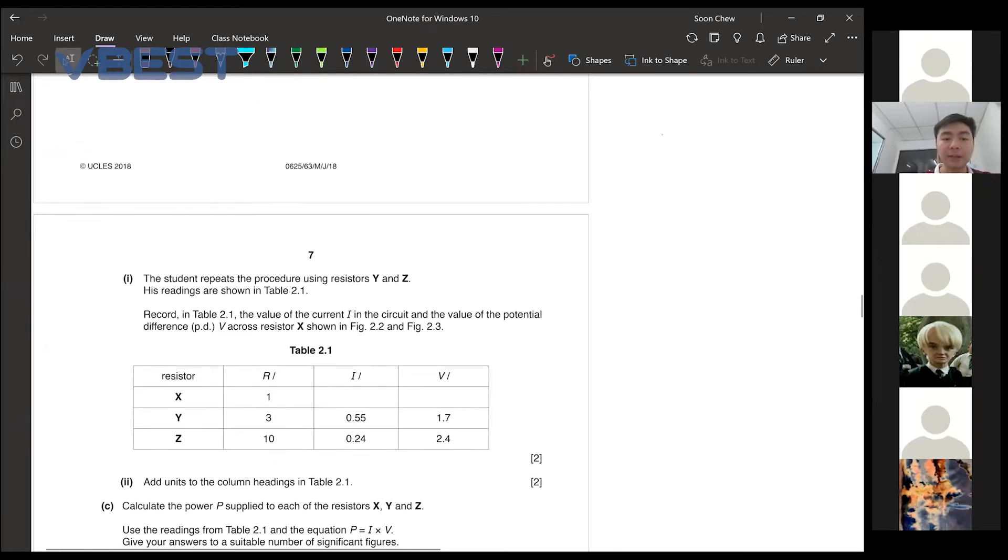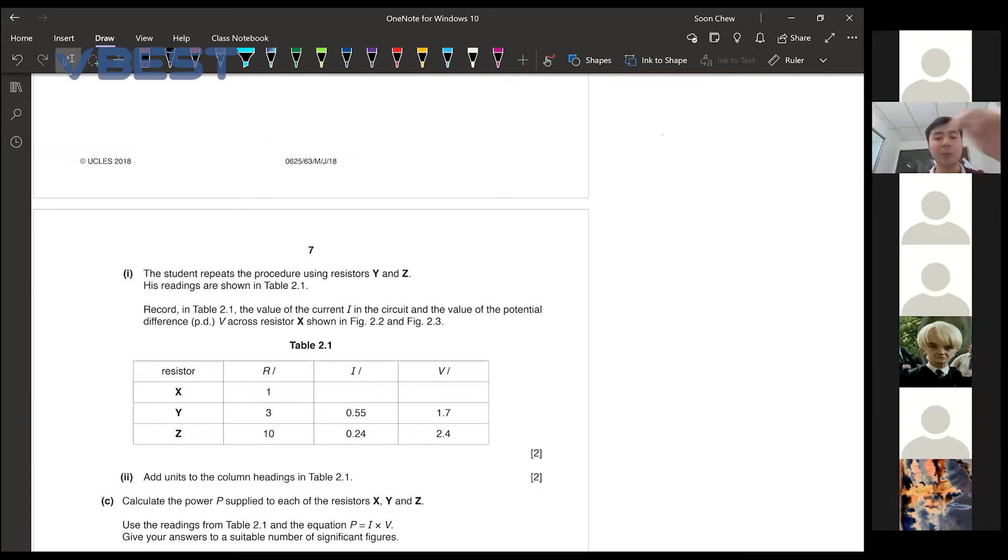Now, the student repeats the procedure using resistor Y and Z. And then you got a new table over here for them. So they want you to complete the whole table. How to draw two resistors in parallel in a series. Calling your question a bit weird. Two resistors in parallel in a series.